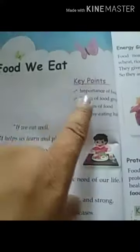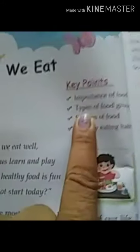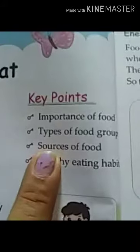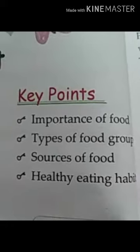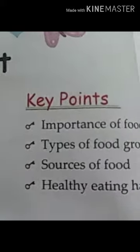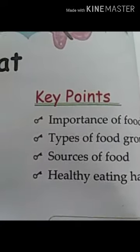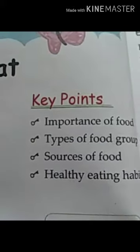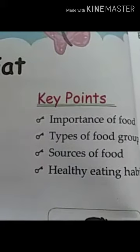Here are some key points for this chapter. Key points means what we are going to learn. We will learn: number one, importance of food — matlab humari life mein food ki kya importance hai, how it is important for us. Number two, types of food. Number three, sources of food. Number four, healthy eating habits.